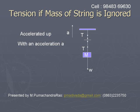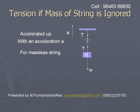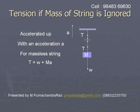Then, consider the block whose mass is capital M. The equation of motion from Newton's second law gives the resultant force as tension, which is equal to W plus MA.